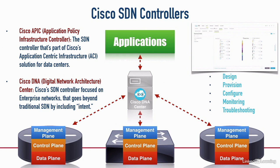The main reason we're bringing up DNA Center in this SDN context is that it acts as a programming platform. It comes with a bunch of APIs — application programming interfaces — that we can use to communicate our intent down to the end devices. That's an overview of software-defined networking. In our next video, we'll zoom in on JSON formatting, which is used to send our intent down to the SDN controller.